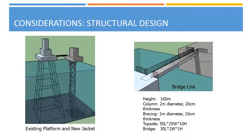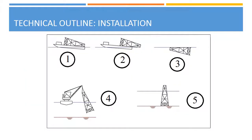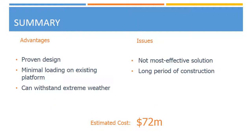The jacket will be fabricated onshore and transported offshore using a barge. At the location of installation, the barge is ballasted and the jacket is slid into the water. The valves at the bottom of the legs are then opened to allow water to enter; once the water enters the legs, the bottom of the jacket will sink. Using GPS, the jacket is hoisted into its final location. In summary, this structure is entirely self-reliant and imposes very minimal loading on the existing platform. The design can also withstand extreme conditions and has been used and proven in many existing offshore platforms. The total cost of this solution is estimated at 72 million dollars. Although this option is more costly and takes a relatively longer time to complete, it is a reliable and safe option.